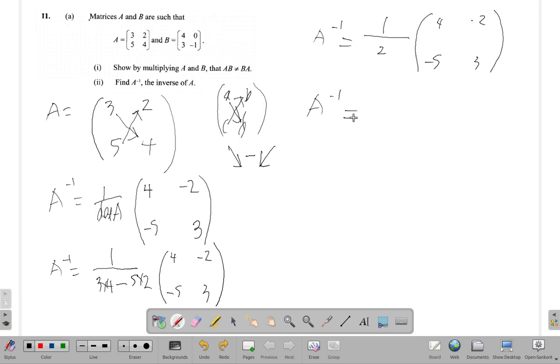So A inverse equals... let's complete it by multiplying the half by the numbers in brackets. Remember, when you multiply a matrix by a single number, you just multiply each element in the matrix by that number. So it's going to be half by four.